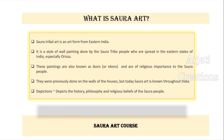These paintings are known as icons and are of great religious significance. They were previously done on the walls of houses, but now you can see Sora art being done everywhere in India and on various modes and bases. Sora art is mainly related to the history, philosophy, and religious beliefs of the people.